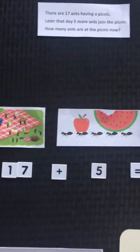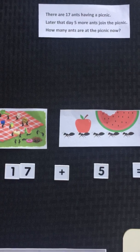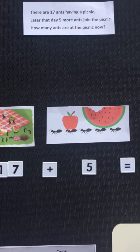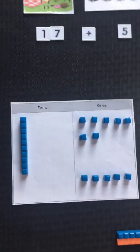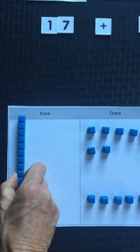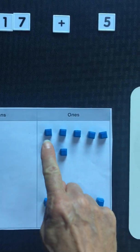17 ants and five more, my equation has the addends 17 and 5. Now I can solve this using base 10 blocks. 17 can be represented by one 10 and seven ones.